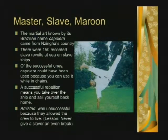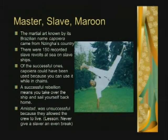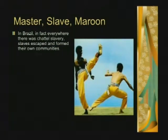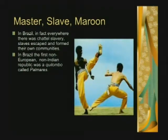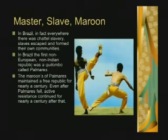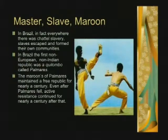Amistad was unsuccessful because they allowed the crew to live — never give a slave an even break. Everywhere there was chattel slavery — especially in Brazil — slaves escaped and formed their own communities. In Brazil, the first non-European, non-Indian republic was a quilombo called Palmares. The maroons of Palmares maintained a free republic for nearly a century, and even after Palmares fell, active resistance continued for nearly a century after that. There are still quilombos and maroon societies today.